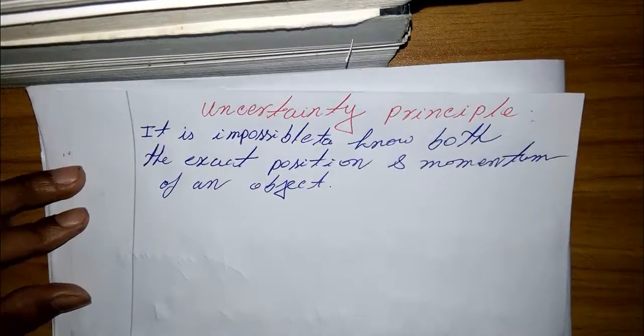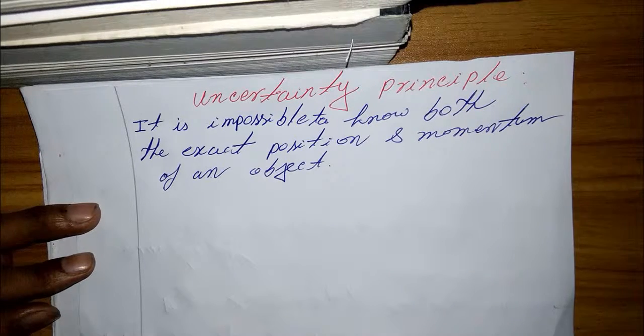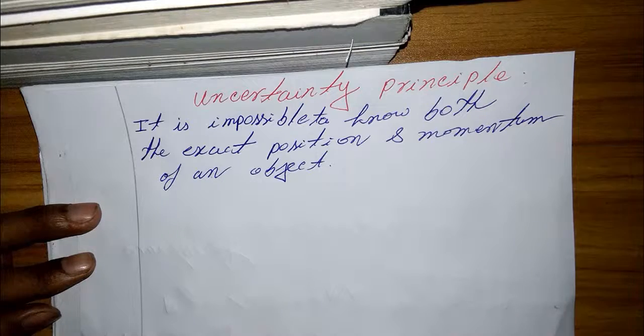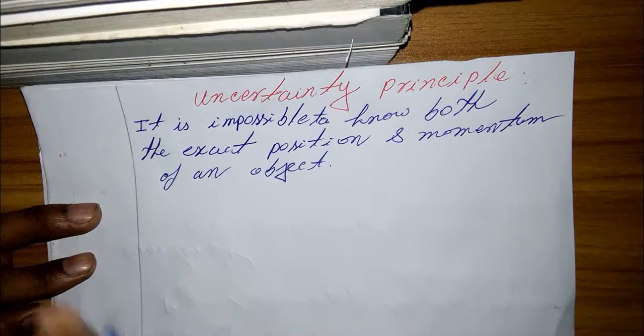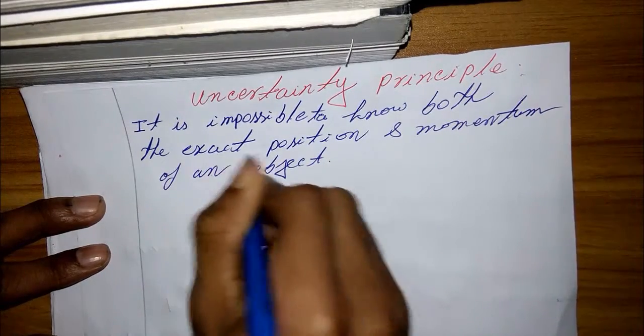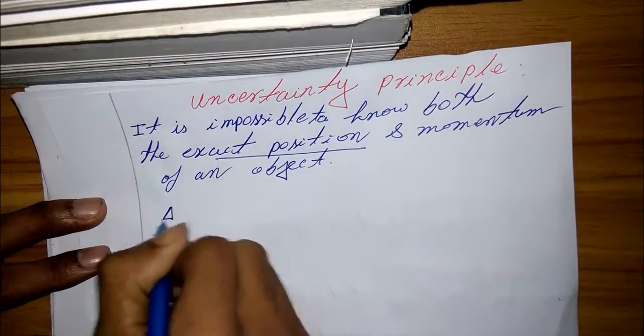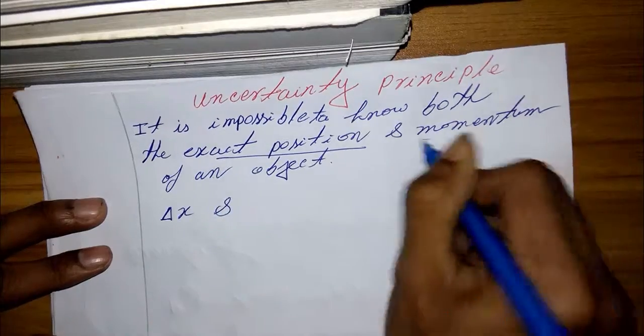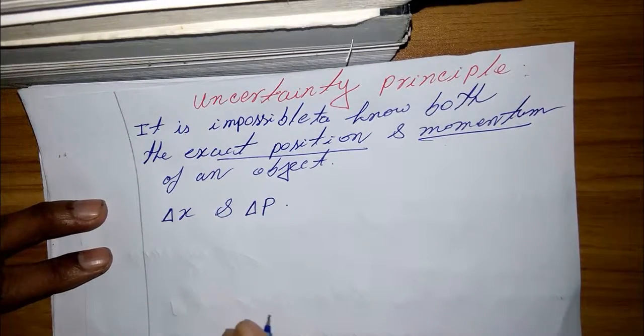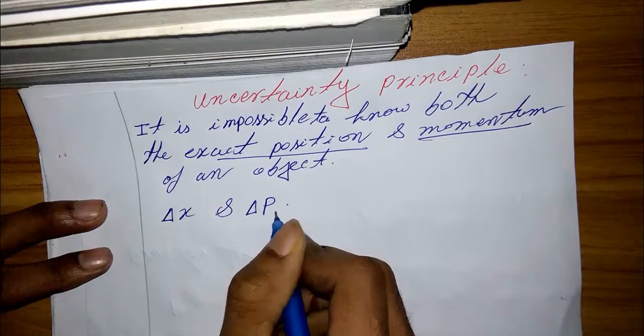Then the spread in position coordinate is del X, and the spread in momentum is del P. They are related through the uncertainty principle. So I take for exact position del X and momentum del P, so the uncertainty principle is